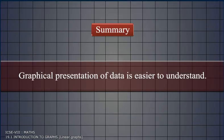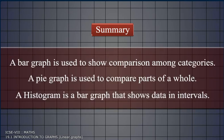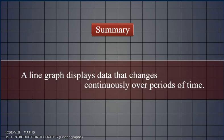Summary. Graphical presentation of data is easier to understand. A bar graph is used to show comparison among categories. A pie graph is used to compare parts of a whole. A histogram is a bar graph that shows data in intervals.